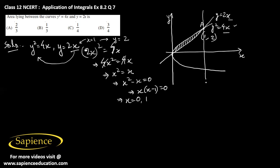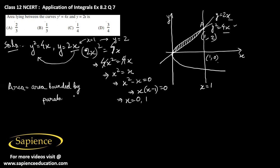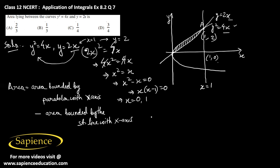If we draw a straight line through point A parallel to the y-axis, its equation is x equals 1, and it intersects the x-axis at (1, 0). The required area equals the area bounded by the parabola and the x-axis minus the area bounded by the straight line y equals 2x and the x-axis.